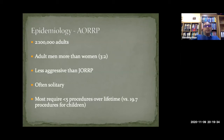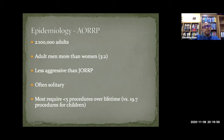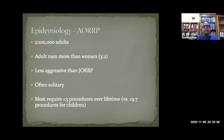Touching on adult onset: less common than kids at two in 100,000, more common in men than women. Adult onset is less aggressive than juvenile onset, and in adults it's usually a solitary papilloma or just a few clumps rather than the extensive disease we see in kids. Adults might need a maximum of around five procedures over a lifetime, but in kids it can go up to 20 procedures.